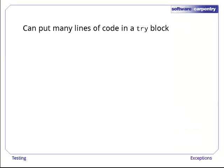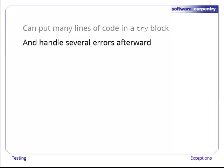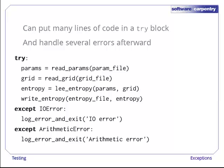We can put as many lines of code in a try block as we want, just as we can put many statements under an if. We can also handle several different kinds of errors afterwards. For example, here's some code to calculate the entropy at each point in a grid. Python tries to run the four statements inside the try as normal. If an error occurs in any of them, Python immediately bails out and tries to find an except whose type matches the type of the error that occurred.